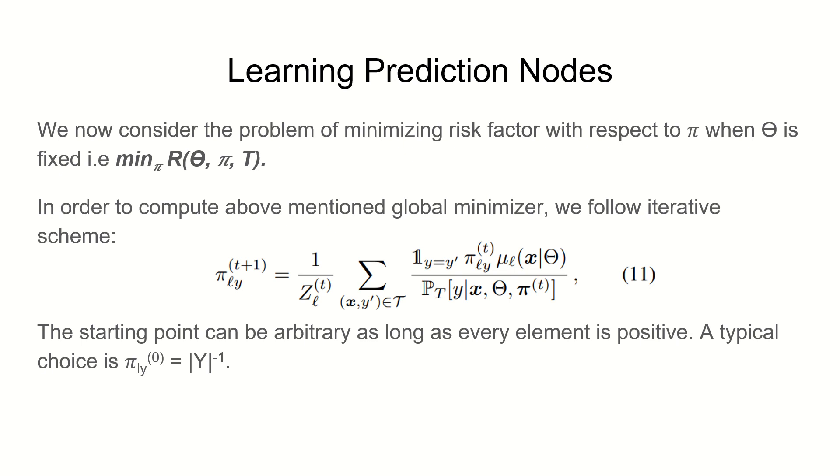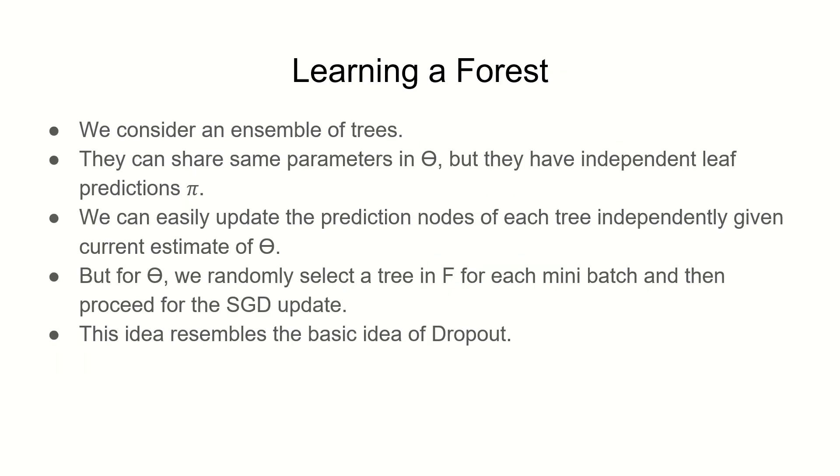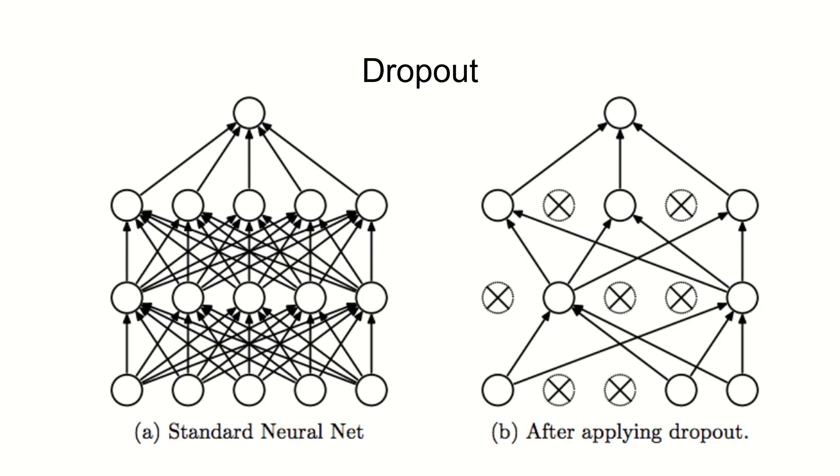Now we learned a tree, let's learn a forest. Since it's just a collection of trees, we can assume that they all share the same parameters in theta but they have independent leaf predictions pi. To calculate theta we randomly select a tree in each mini batch and then proceed for SGD update mentioned before.